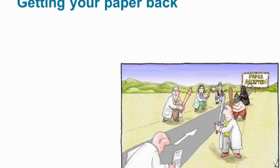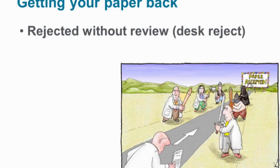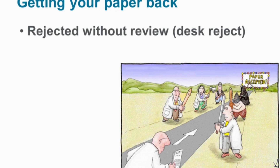Moving on to the next slide — getting your paper back. There are lots of different decisions you can get, but they can broadly be broken down into these categories. The first, which is very common, is called a desk reject, or rejected without review. This mainly tends to be because the paper is out of scope for the journal you submitted it to, or because the paper is not of the quality that journal is looking for. The editor would simply deem that it wasn't ready or appropriate to send it out to reviewers, as reviewers really don't like being sent papers they feel the editor should have screened out.